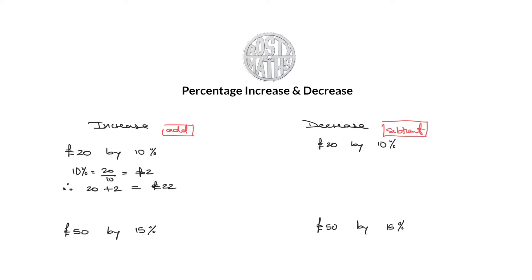So to find 15% I'm going to find 10% first. So that's going to be 50 divided by 10 which is going to be five, £5. Let's actually say that that's £5 in case somebody gets confused, that's £5 there.